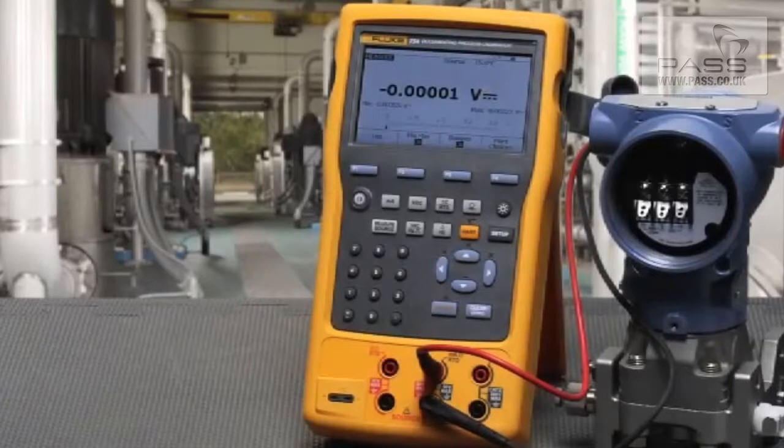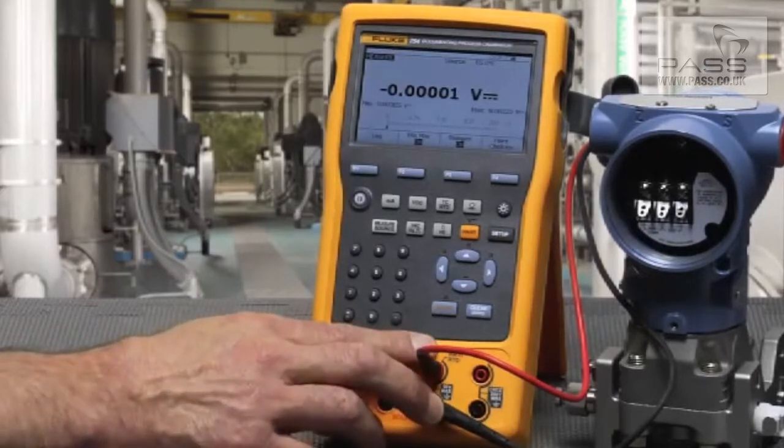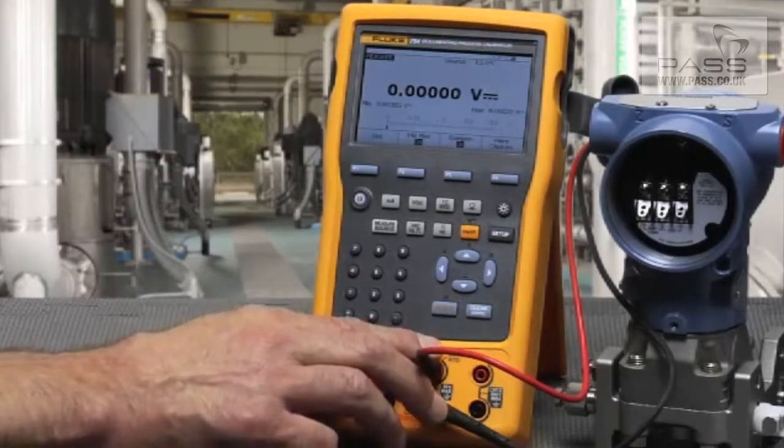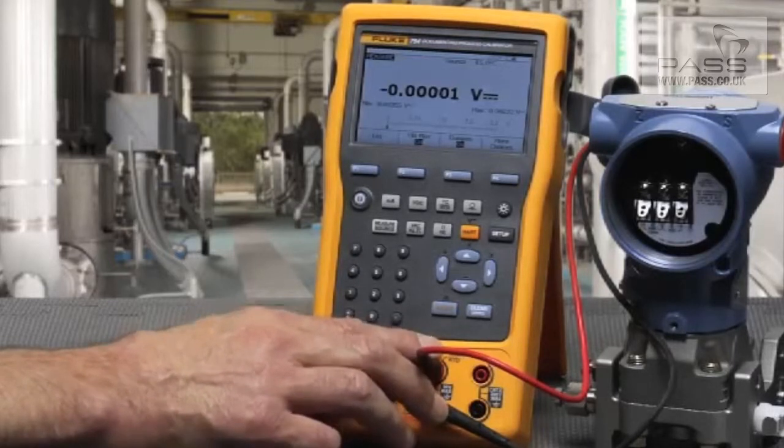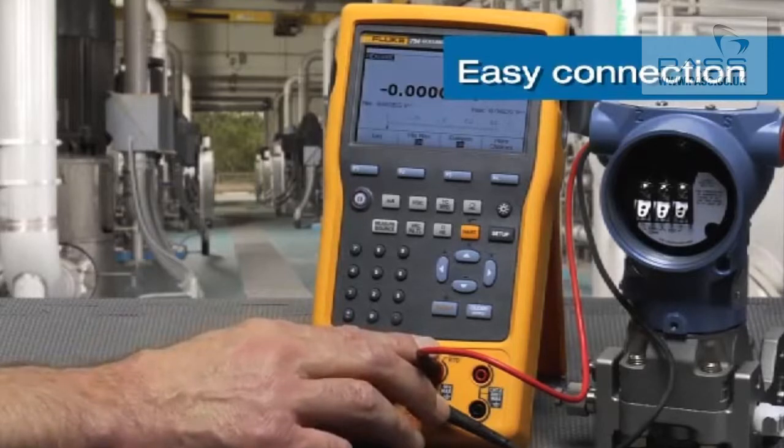I'm going to show the HART configuration utilities of the Fluke 754 HART Calibrator. I will have the HART connection routed through the milliamp measurement terminals. We'll measure the milliamp signals of the transmitter as well as power it via the loop and switch in the 250 ohm resistor automatically.